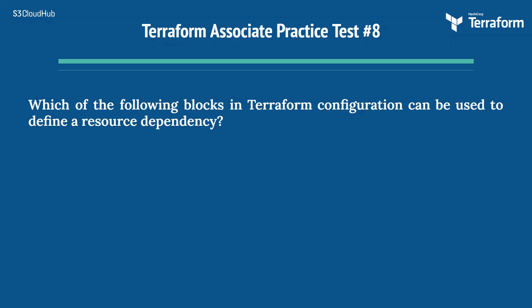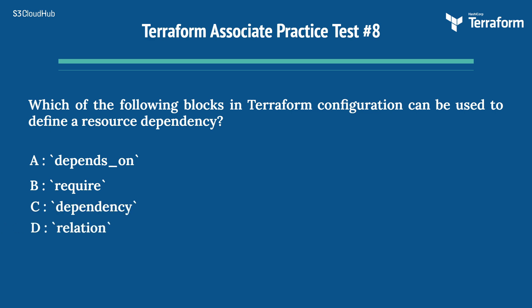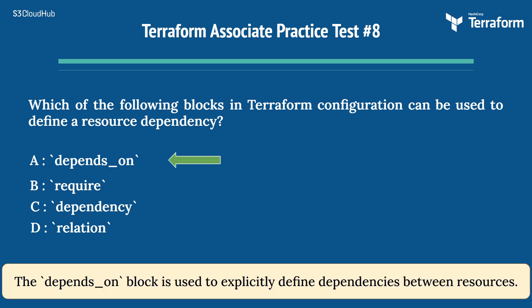The eighth question is: which of the following blocks in Terraform configuration can be used to define a resource dependency? Option A: depends_on. Option B: require. Option C: dependency. Option D: relation. The right answer is Option A: depends_on. The depends_on block is used to explicitly define dependencies between resources.